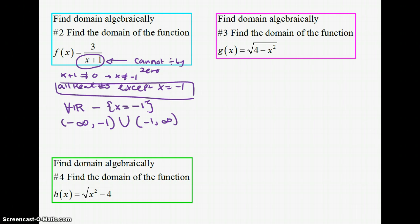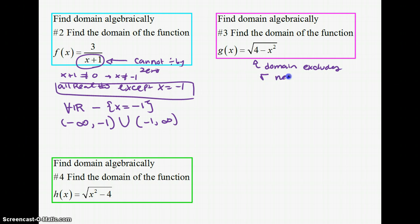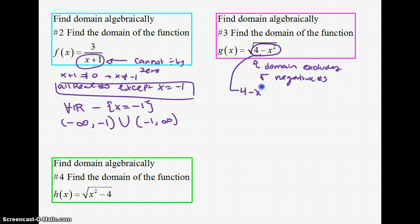For problem 3, we find the domain of a square root function. For square roots, the domain excludes taking square roots of negative numbers. Everything underneath the square root — 4 − x² — has to be greater than or equal to 0, because the square root of 0 is 0 and that's still okay.